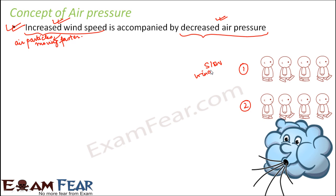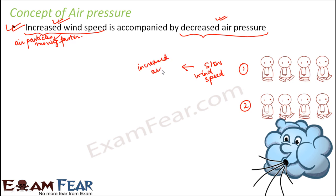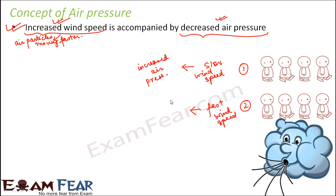When the wind speed is slow, each particle has enough time to exert a lot of pressure, resulting in increased air pressure. Whereas when the wind speed is very fast — increased wind speed — each particle doesn't have enough time to exert pressure, and this is accompanied by decreased air pressure.